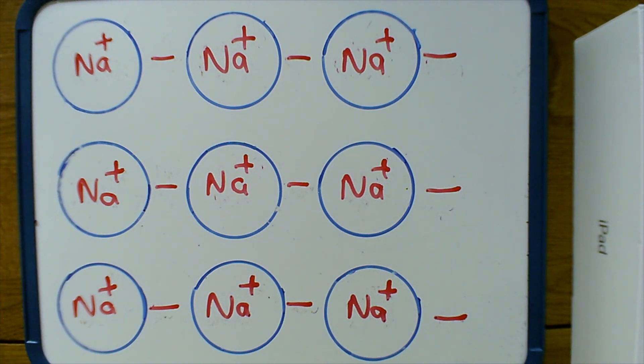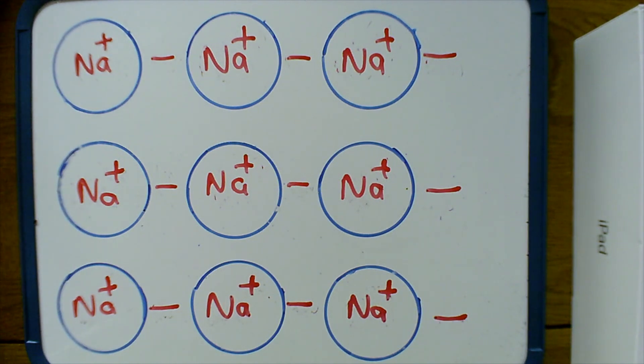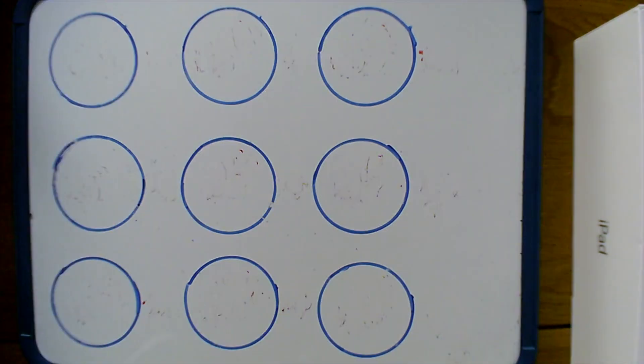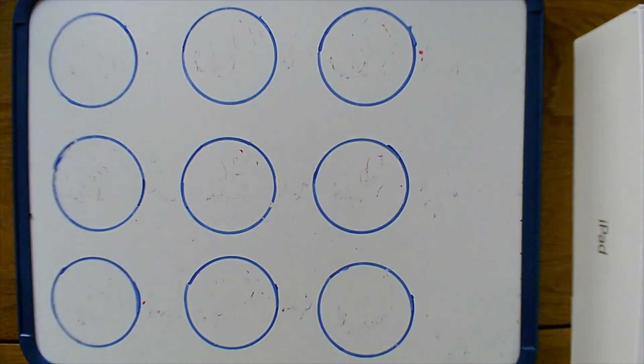We can use this model to explain the properties. For example, metals conduct electricity and heat, and the reason for this is because they have this sea of delocalized electrons.